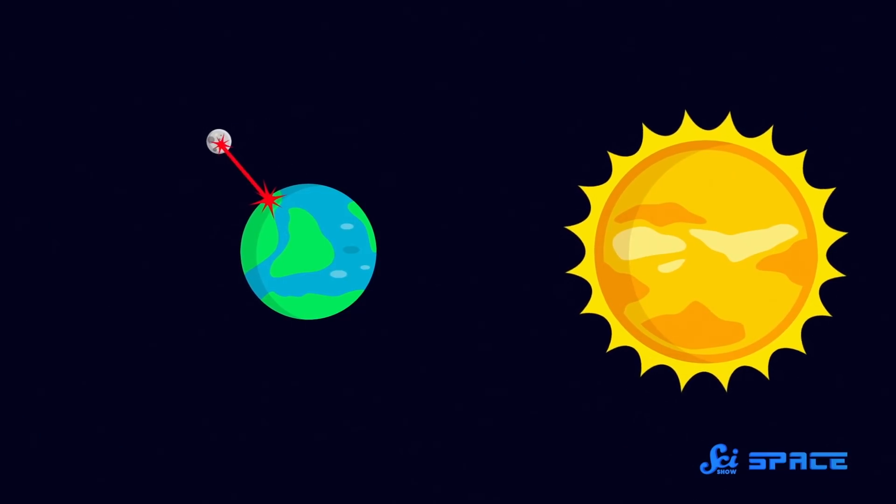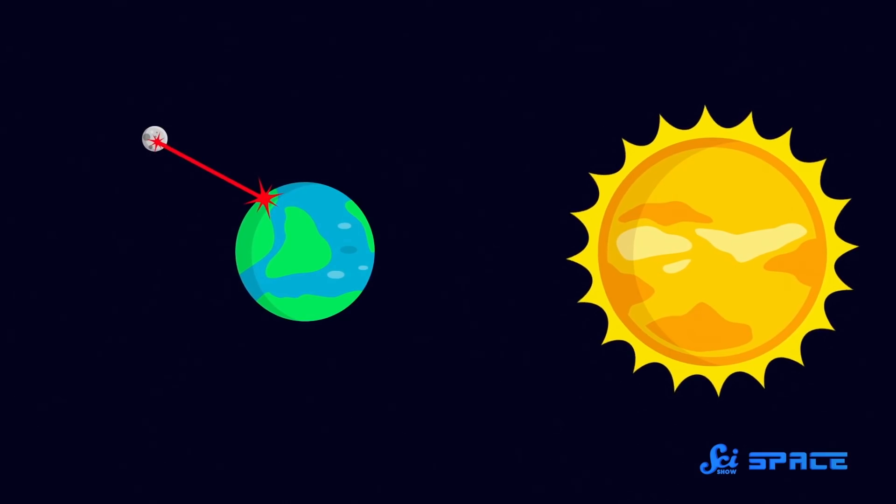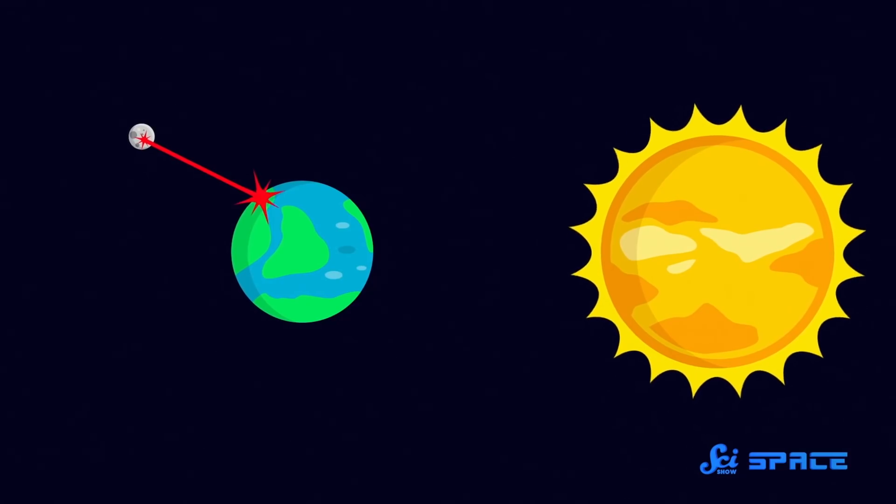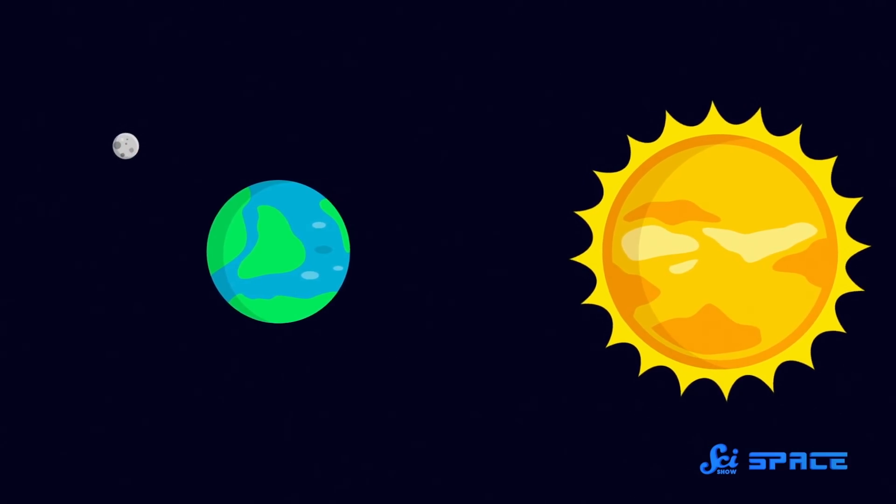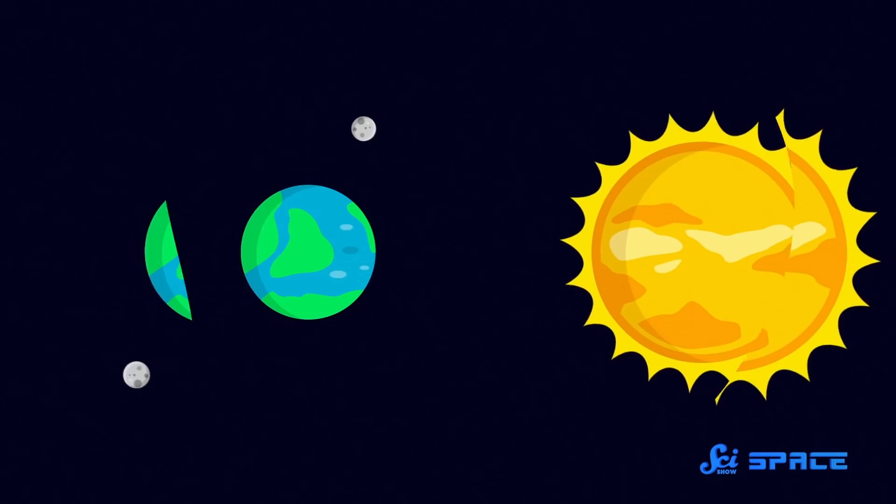Instead, we could shoot a laser at the Moon, with the power of every wind turbine currently operating in the US. And that would push the Moon's orbit out from the Earth, which would drag the Earth farther out with it. This would totally work, if you have 300 trillion years to wait.